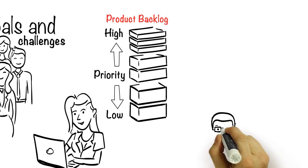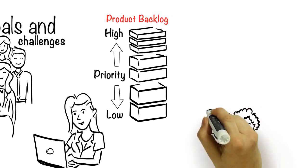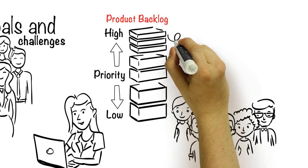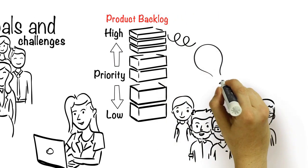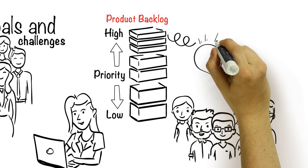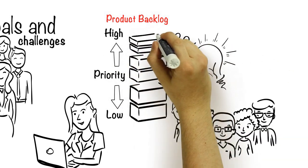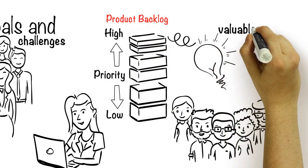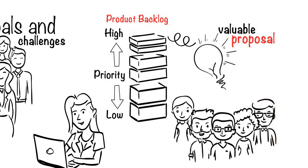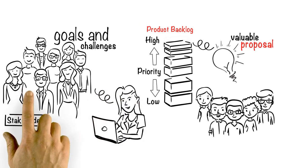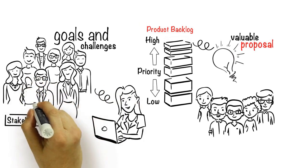Anna then starts a dialogue with her development team about the most important improvement request on top of that list. They design the smallest valuable proposal they can come up with and Anna validates this with her stakeholders.